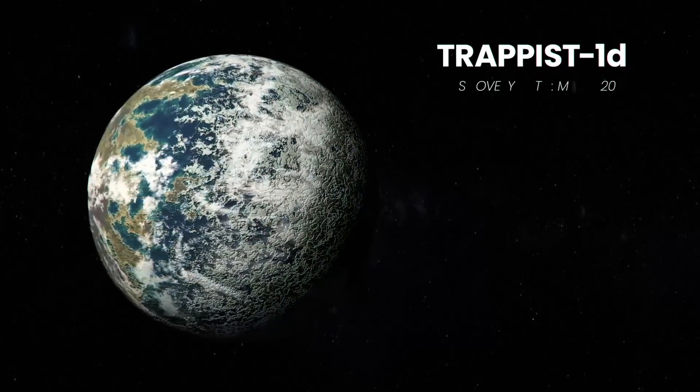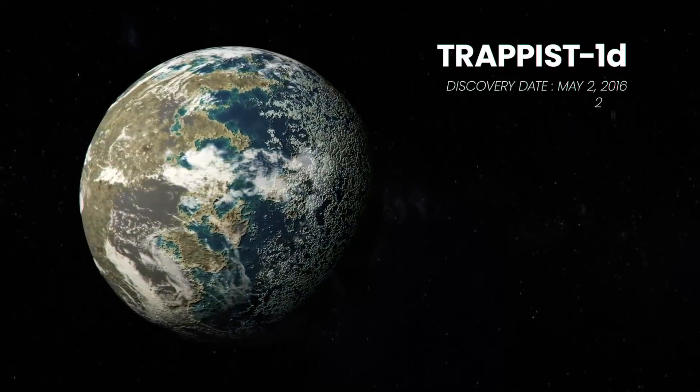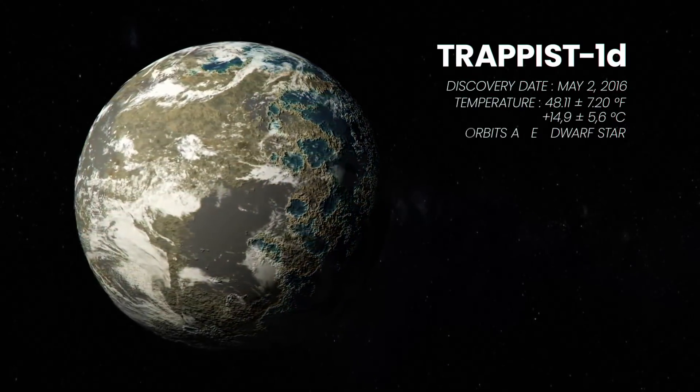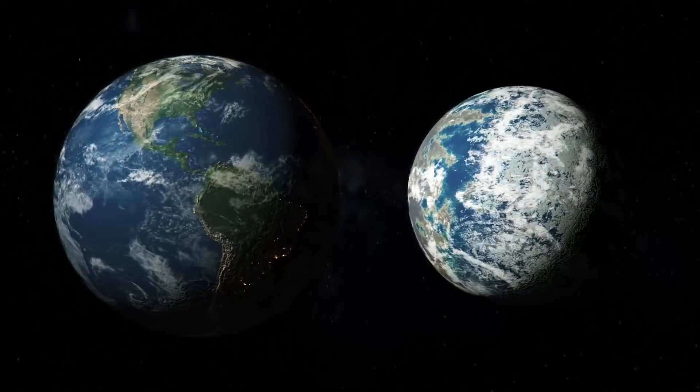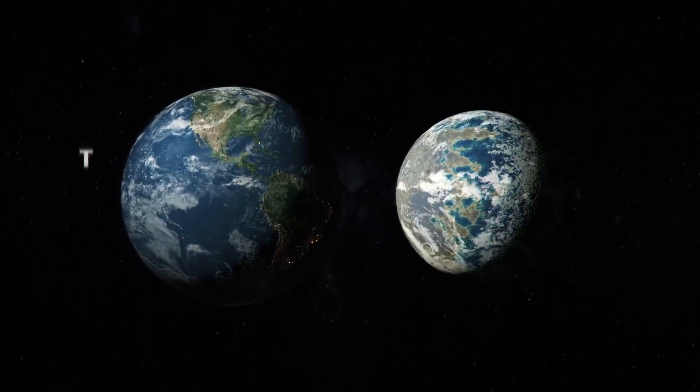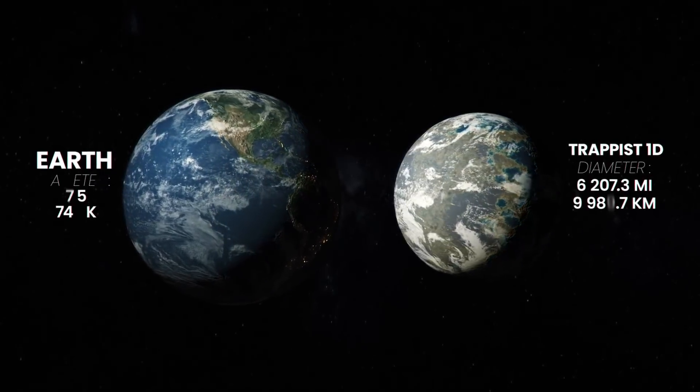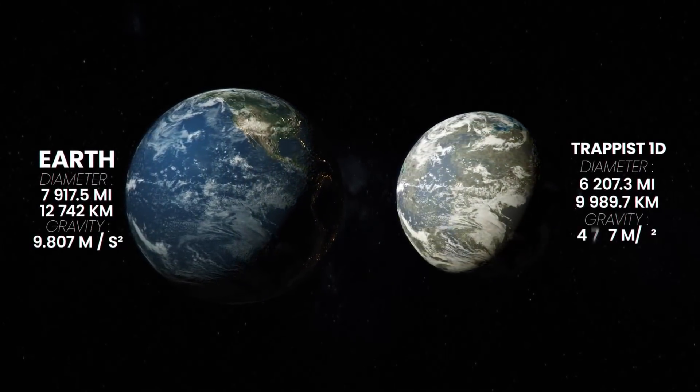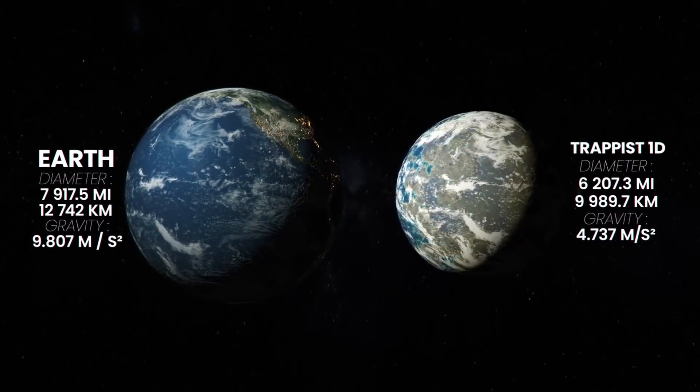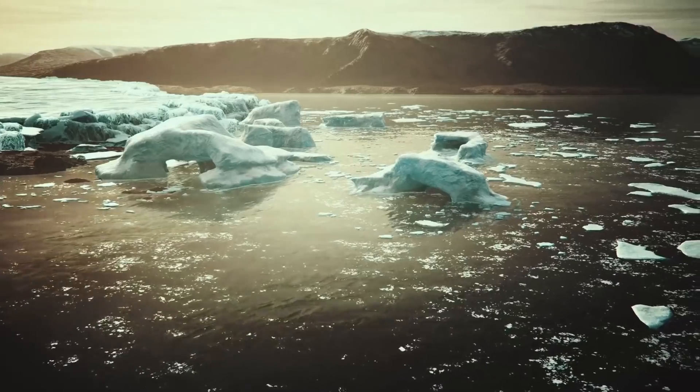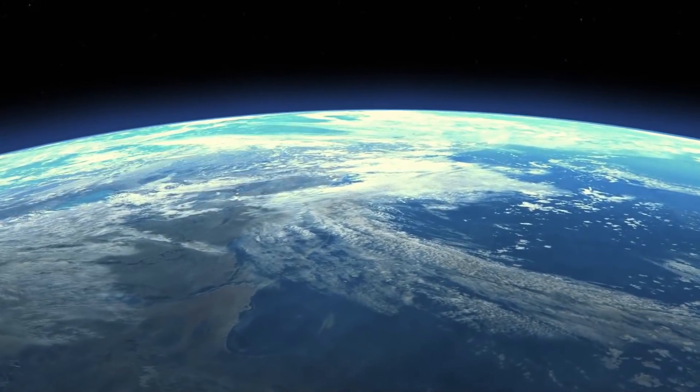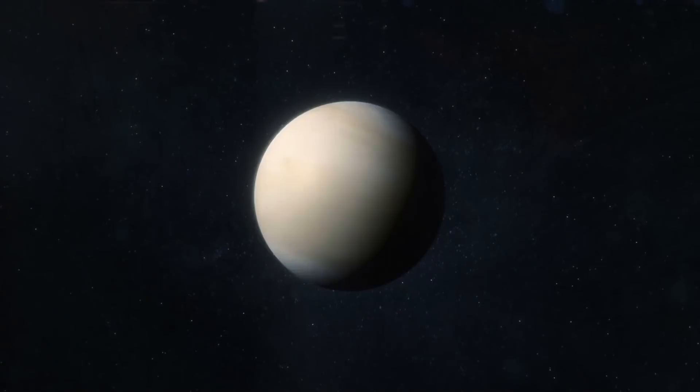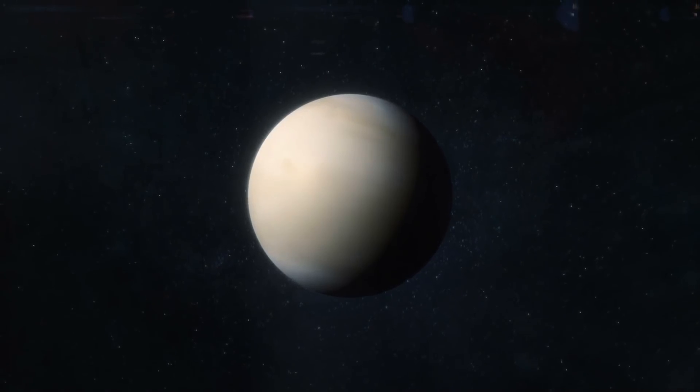Trappist-1d is the least massive planet in the system and likely has a compact, hydrogen-poor atmosphere similar to Venus, Earth, and Mars. It has half the gravity of our planet and it gets about 4.3% more sunlight from its star than Earth does, lying on the inner edge of the habitable zone. This planet could have oceans or layers of ice. However, a new study shows this planet could be more like Venus with an uninhabitable atmosphere.